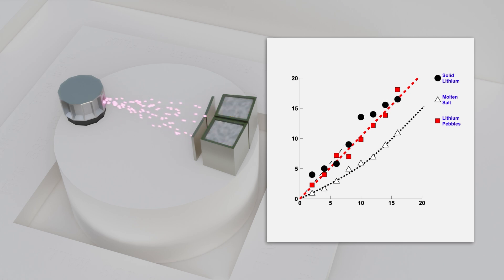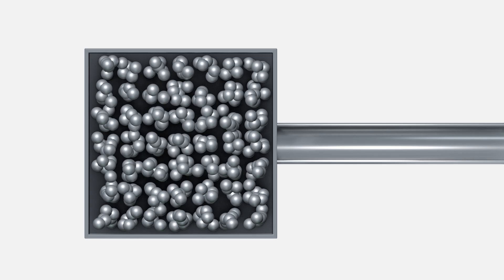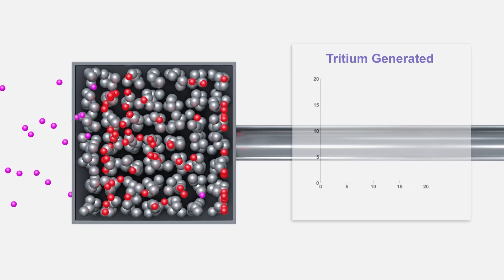Once the Liberty neutron source generates neutrons and the breeder experiment starts to produce tritium, data points for tritium concentrations and species across the experiment will be recorded.